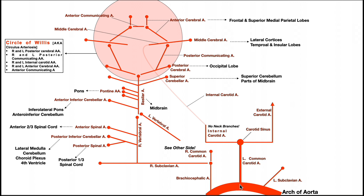Let's first look at the arch of the aorta, or the aortic arch. There are three major branches that come off the arch of the aorta. The first one, most proximal to the aorta itself, is the brachiocephalic artery. Then we have the left common carotid artery and then the left subclavian artery. The brachiocephalic artery is going to bifurcate into the right common carotid artery and the right subclavian artery.